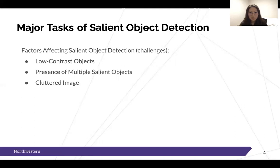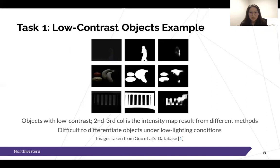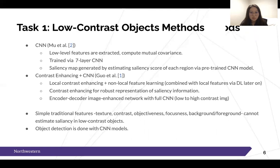There are a couple of tasks that researchers have been trying to tackle: low contrast objects, detecting multiple salient objects, and detecting objects from cluttered images. Low contrast objects are difficult to tackle, and researchers have proposed object detection with neural networks. In such low lighting scenarios, it is difficult to detect due to the lack of well-defined features to represent salient information. Mu et al. proposed a method using convolutional neural networks, extracting low-level features and computing mutual covariance. A saliency map is generated by estimating the saliency score of each region through a pre-trained CNN model trained with a seven-layer convolutional neural network.